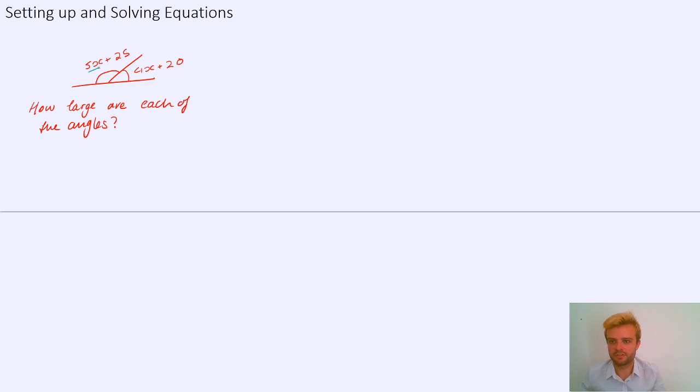So if I take those two angles, if I take this one 5x plus 25 and if I add to it 4x plus 20, so if I add those two angles together my answer is going to be 180. It doesn't matter that they are algebraic expressions at the moment. The fact is those two angles added together make 180. And now we can simplify this down a bit because we've got 5x here and 4x here. So if I add those together that's 9x. I've then got 25 and 20. If I add those together I get 45. So 9x plus 45 equals 180. And now we have an equation that we can solve.